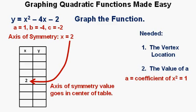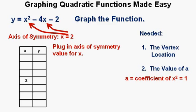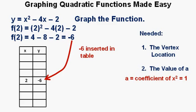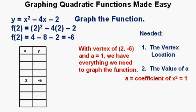We place that value of 2 as the center input value in the table. To get the associated output value, we plug 2 into our original function: f of 2 equals 2 squared minus 4 times 2 minus 2, which equals 4 minus 8 minus 2, which equals negative 6. So now we have the vertex location, which is (2, negative 6), and the value of a, which is 1. This is all we need to graph a quadratic function.